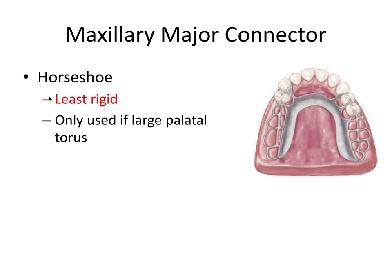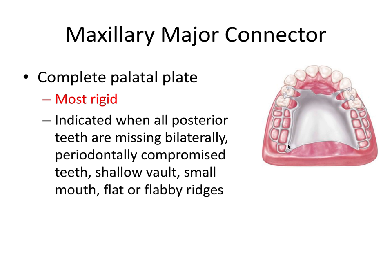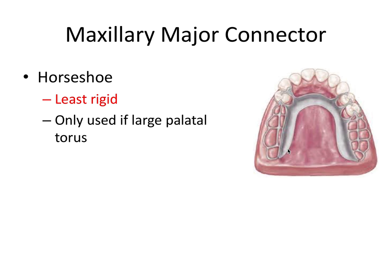The next design is the horseshoe design, and this is on the other end of the spectrum — it's the least rigid design. You can notice how much thinner it is when you compare it to the complete palatal plate, so it makes sense that it would be less strong and less rigid.